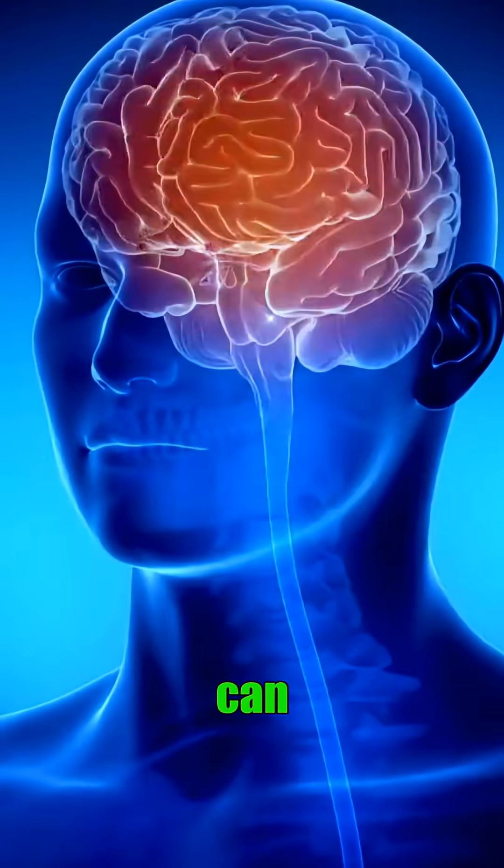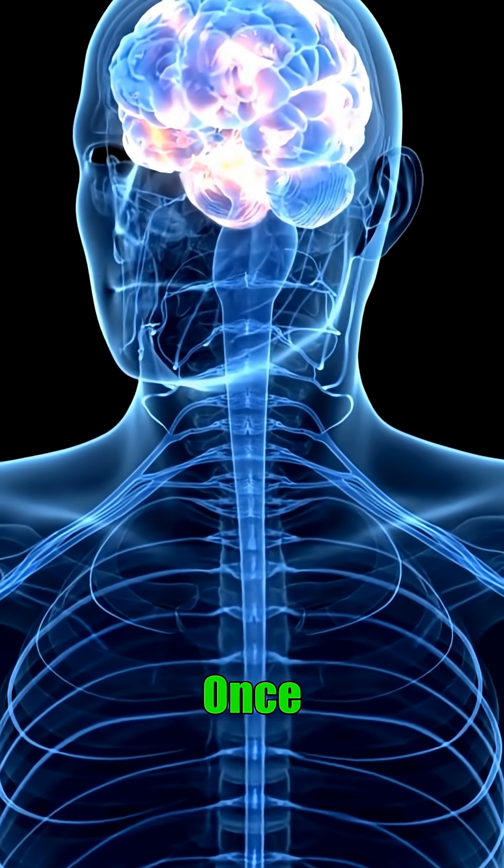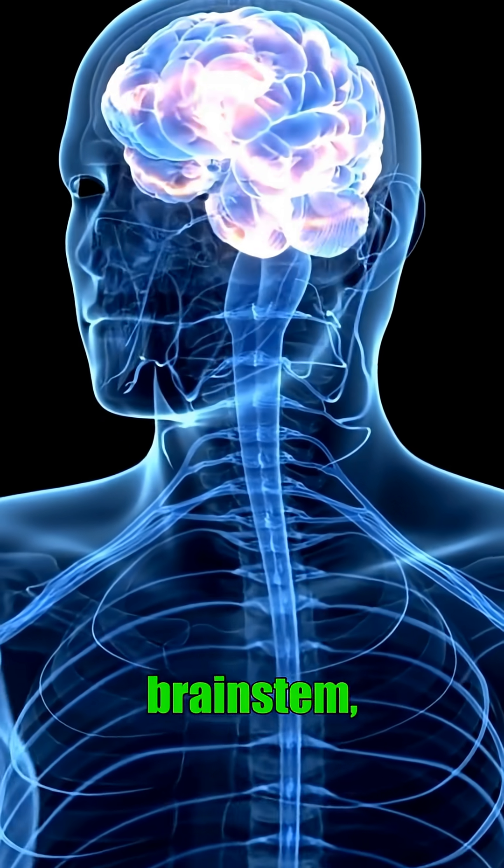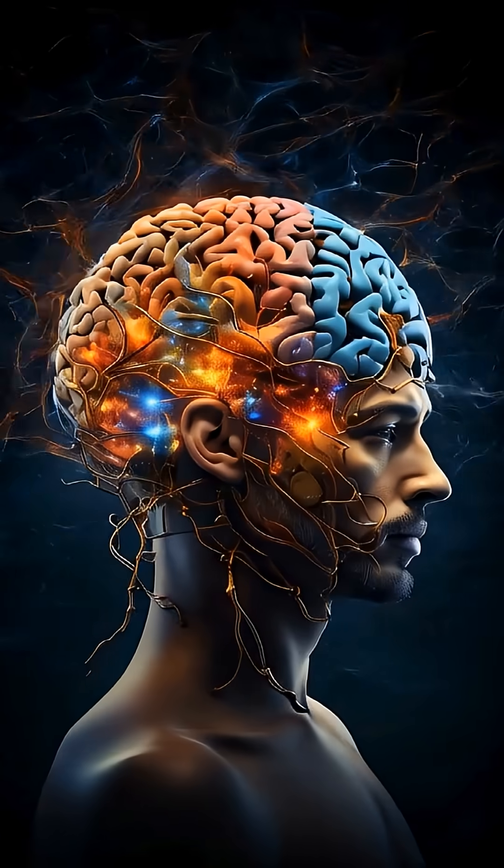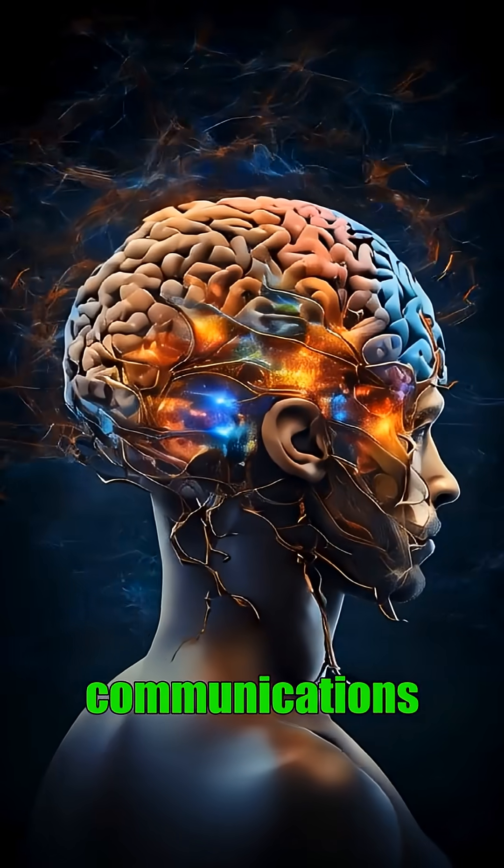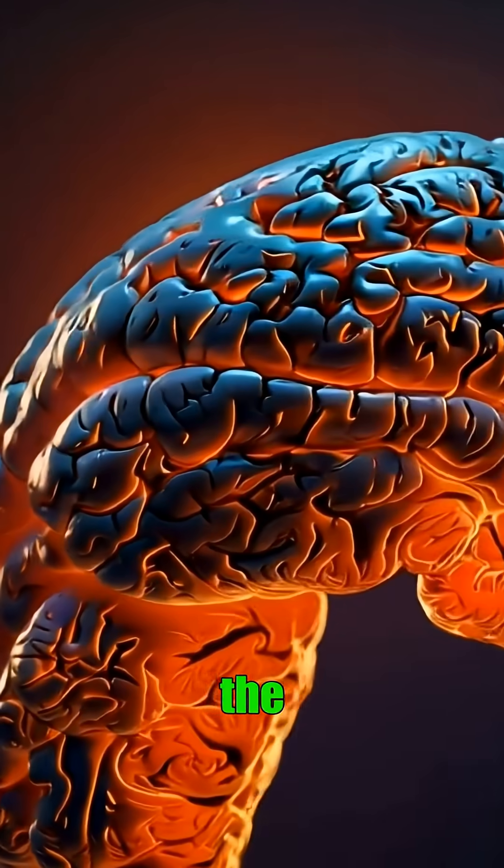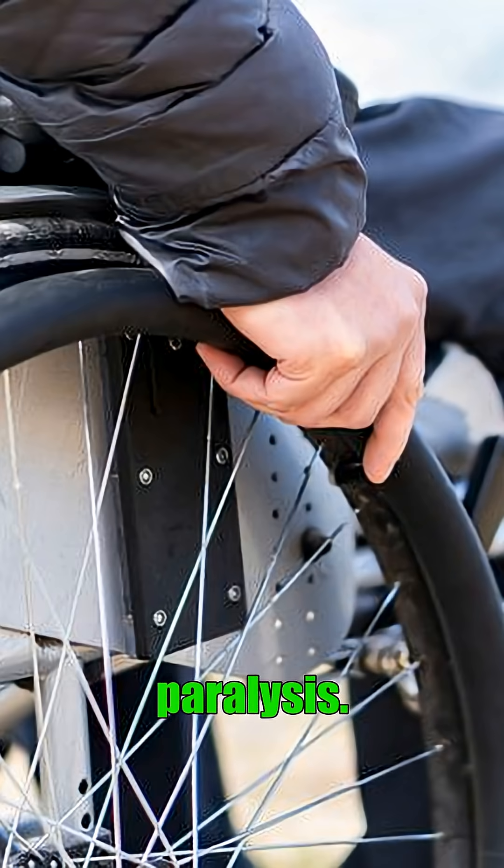This slow travel can take weeks to months. Once the virus reaches the brainstem, death is certain. It kills by messing up neuron communications so much that the brain cannot function, leading to symptoms like confusion, aggression, and paralysis.